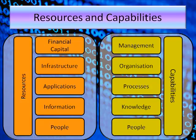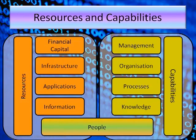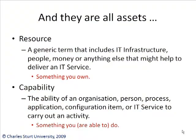So you find people both in resources and capabilities — people with the right abilities now become capable to do the work. In the end, they're all assets: resources are assets and capabilities are also assets, and you need them both if you want to deliver your services to your customers. A resource is a generic term that includes IT infrastructure, people, money or anything else that might help to deliver an IT service.